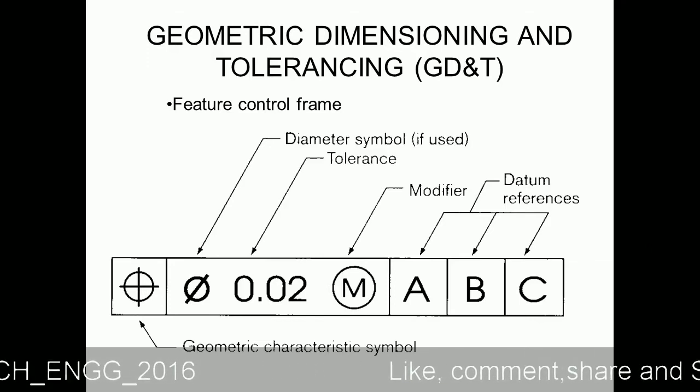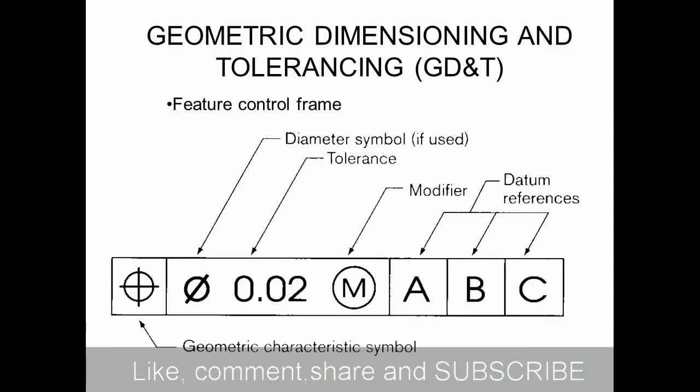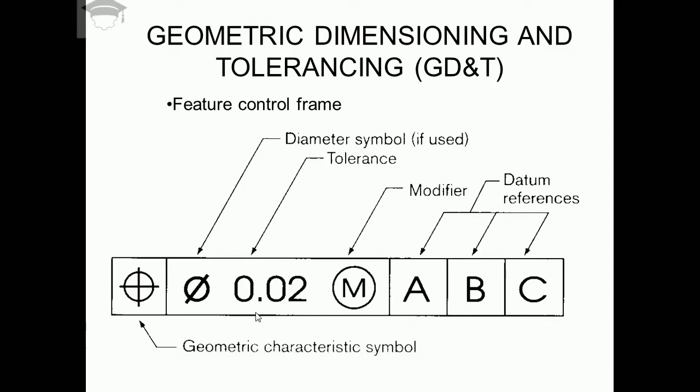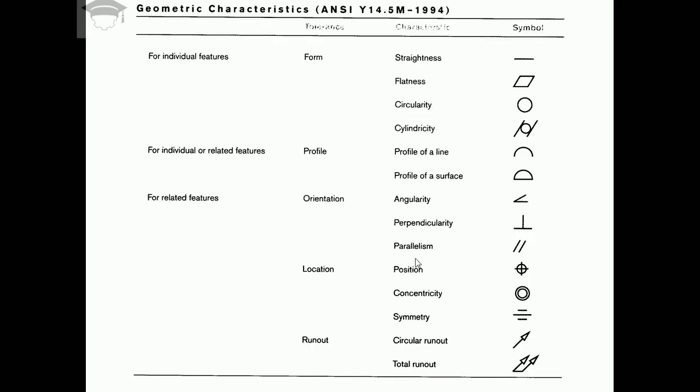Adjacent to the part, we make a block and write inside it. The first symbol is the geometric characteristic symbol, whether it is concentricity, position, parallelism, or flatness, depending on our requirement.